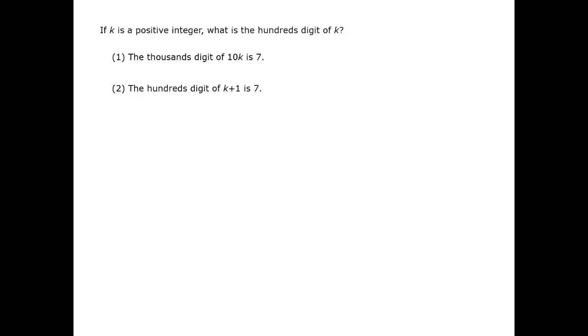In this question, we know this number k is an integer, and a glance at the statements indicates that we may or may not have a thousands digit. We can imagine the digits each in a spot like this. Here the shaded position is the hundreds digit, which is what we're looking for.